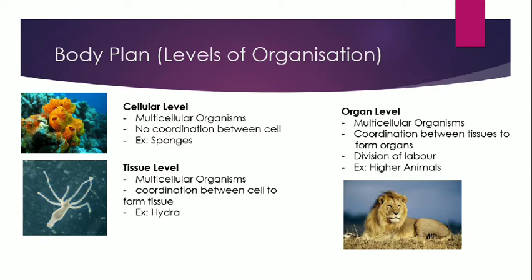Tissue level is also found in multicellular organisms. Here, tissues are formed by the combination of cells, and these cells complement each other and work in coordination. For example, nerve cells conduct messages, muscle cells perform contraction, RBCs transport oxygen, and gland cells perform secretion. All these are associated with each other and perform a specific task — these are known as the tissue level.